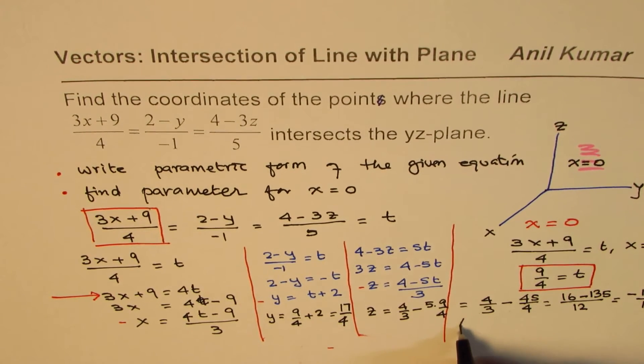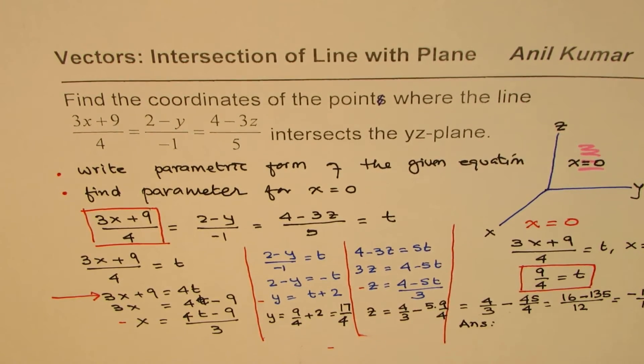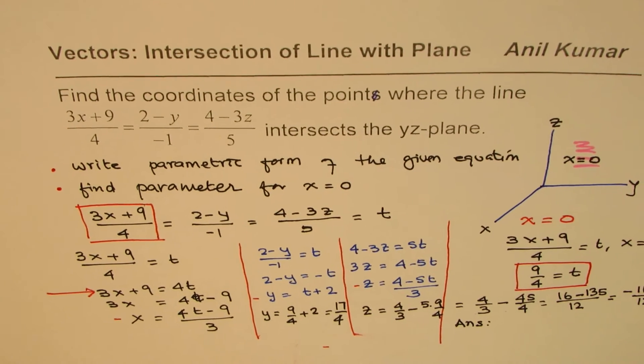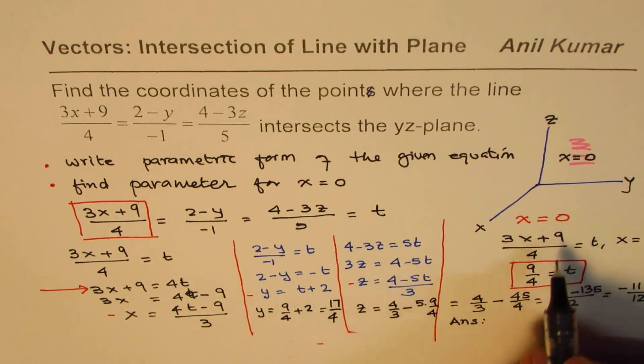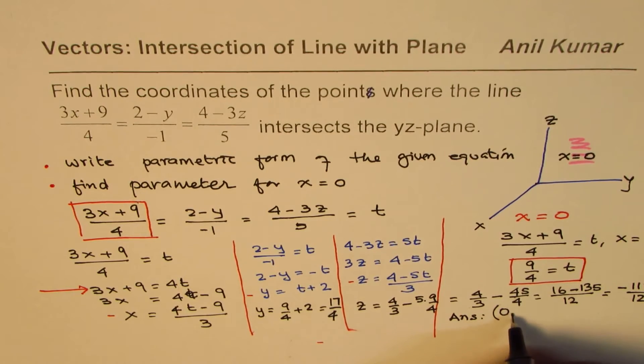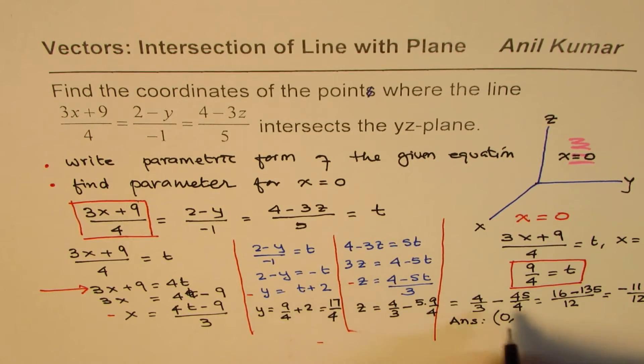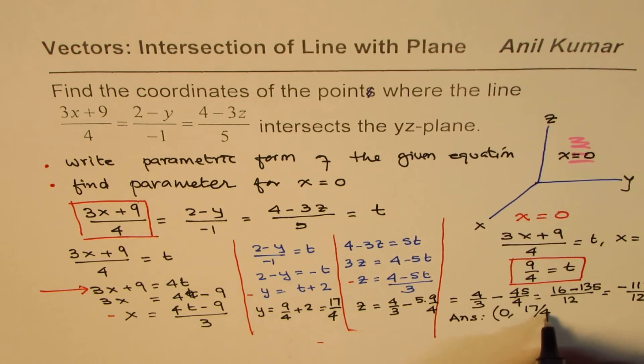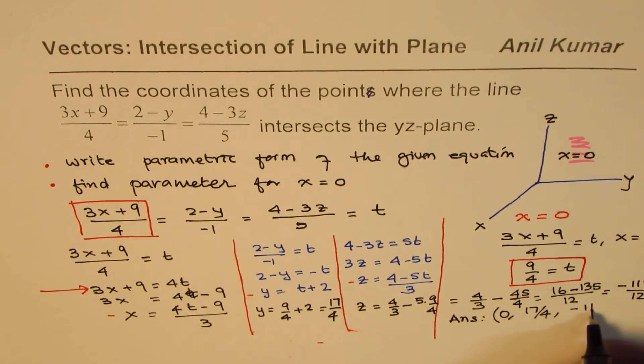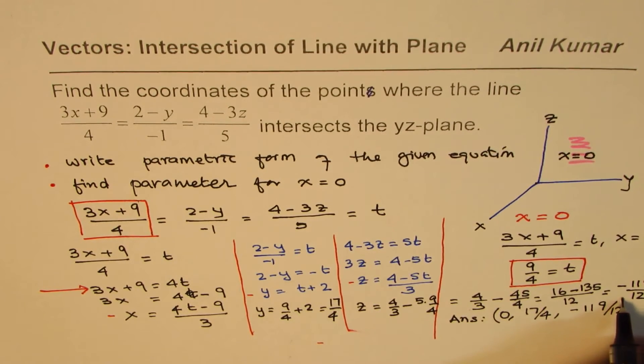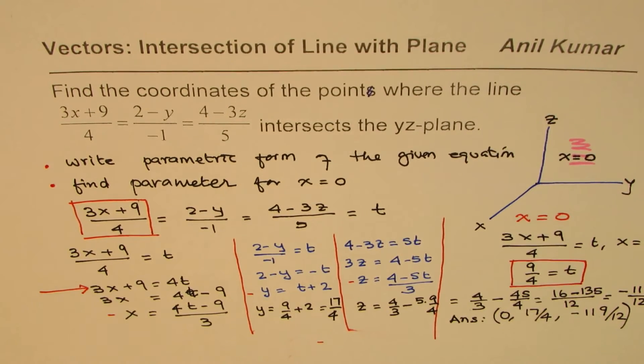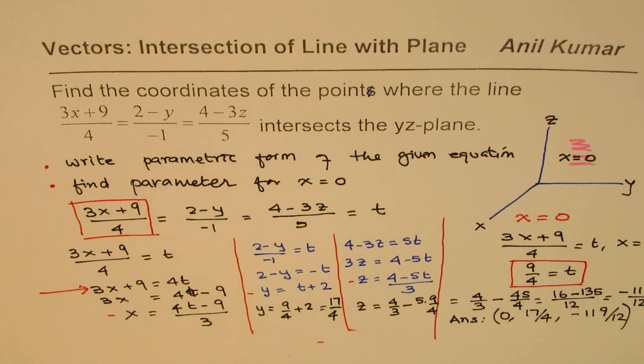That gives us the coordinate points. So our answer here is x value as 0, y value is 17/4 and z is -119/12. That is how you can find the solution to this.